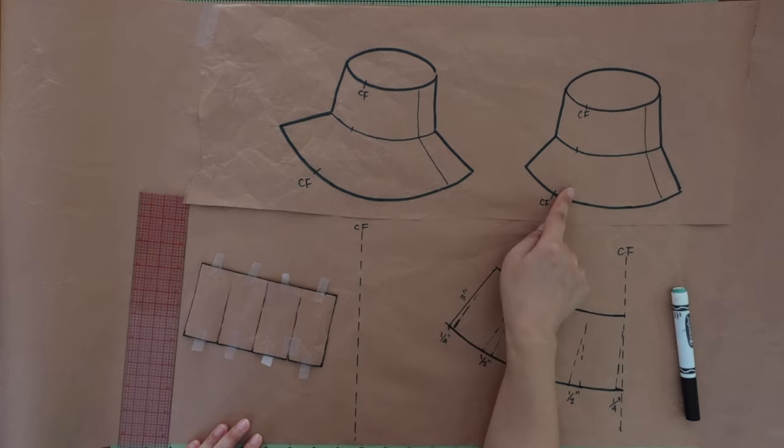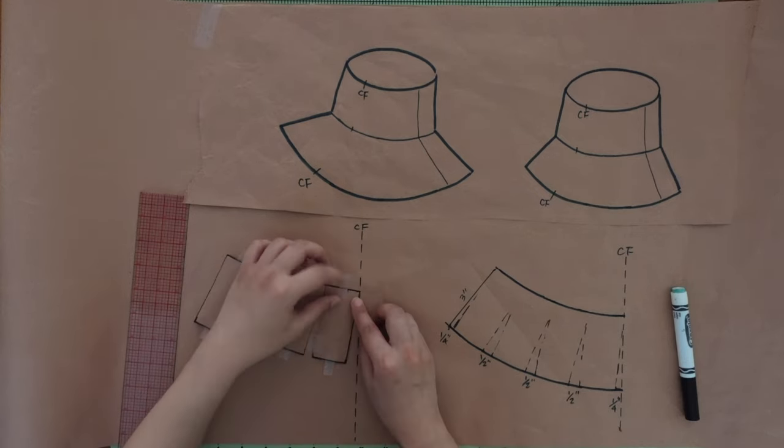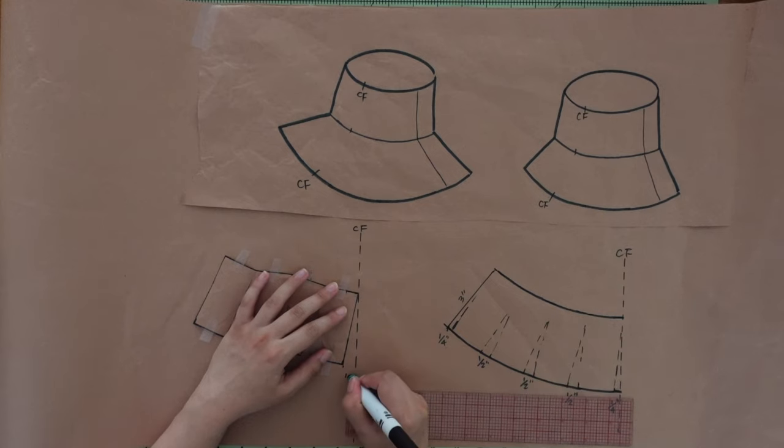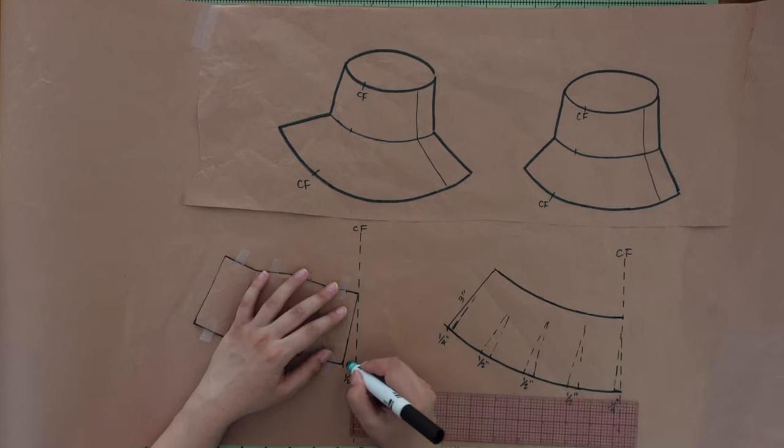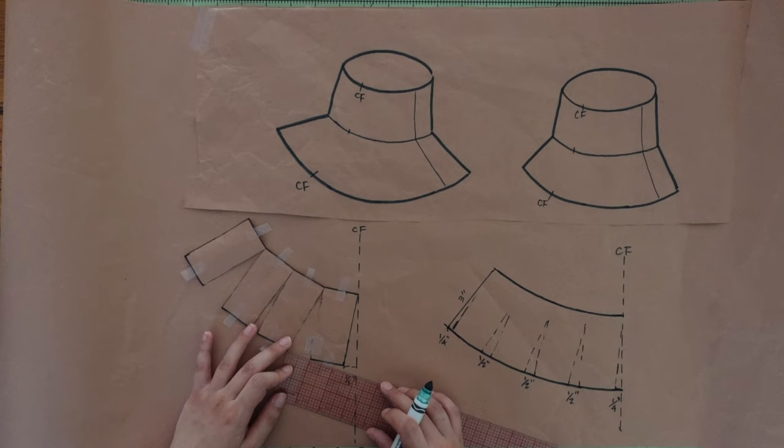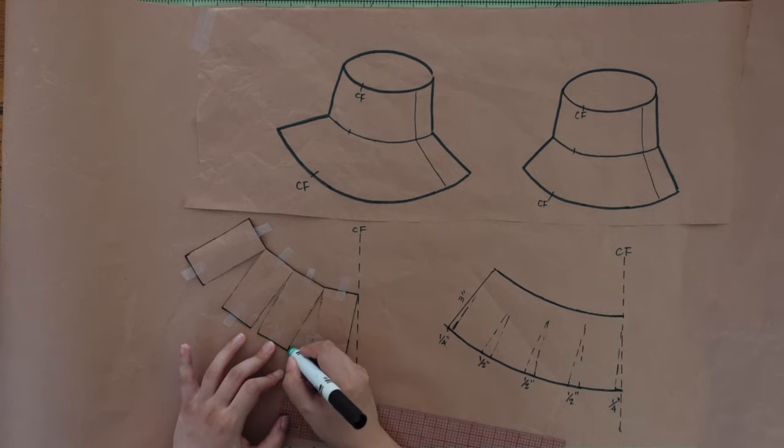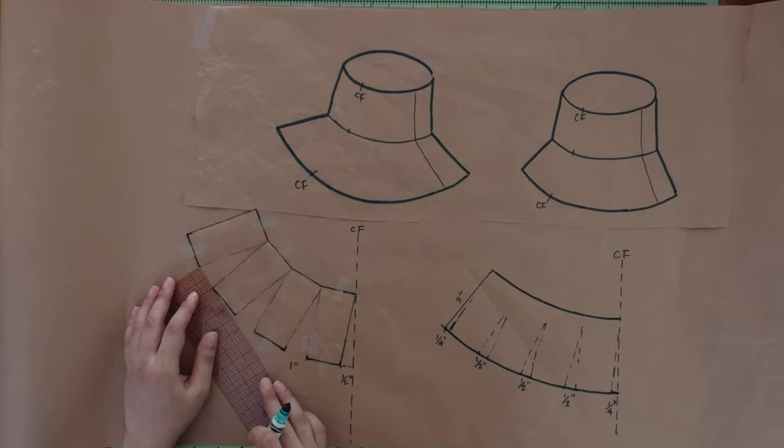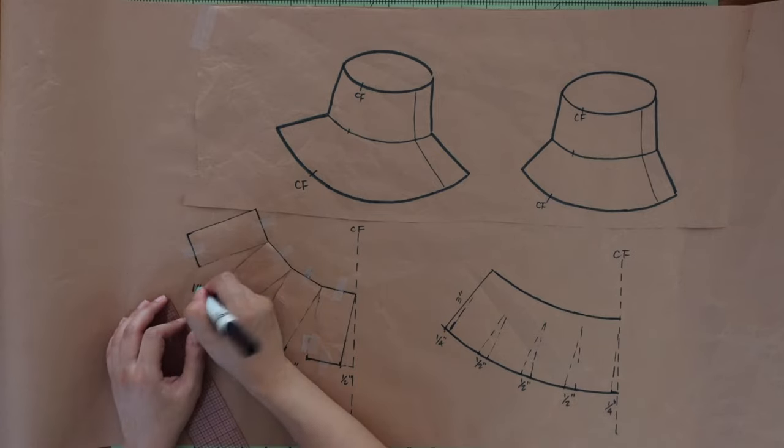To draft this wider brim than this one, I'm going to double the amount I add in these sections. I add half inch at the center front, one inch each between these cut pieces and half inch at the end.